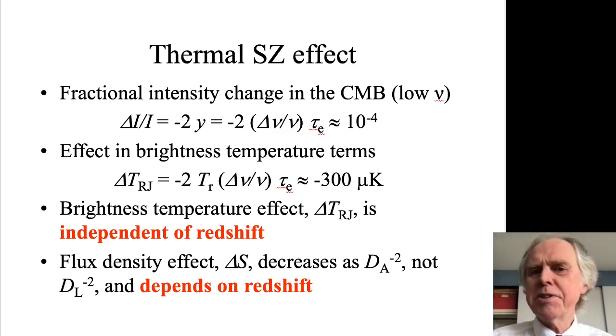That's sort of true, but because the flux density effect depends on angular diameter distance, not luminosity distance, the flux density of one of these clusters decreases out to about redshift 1.6 and then increases again because the angular diameter distance in an expanding flat universe dominated by dark energy reaches a maximum at some redshift. Very distant objects have larger angular sizes. So the flux density effect can go back up and potentially clusters of galaxies can get brighter again. The SZ effect could be an excellent way of finding extremely distant clusters of galaxies, and that's of interest if you're studying how structure in the universe has changed over cosmic time.